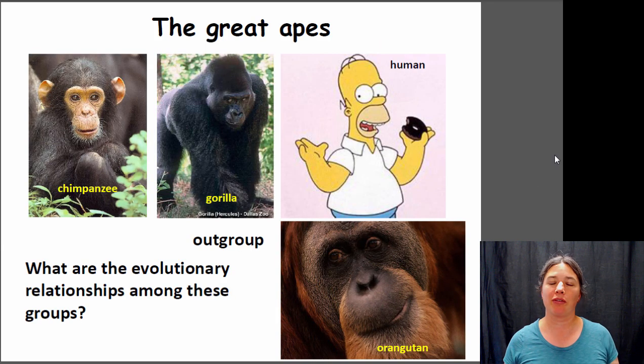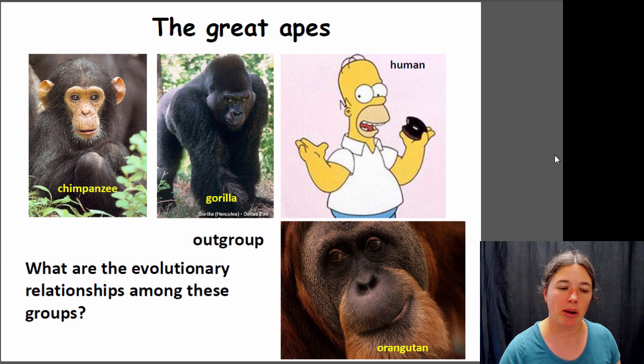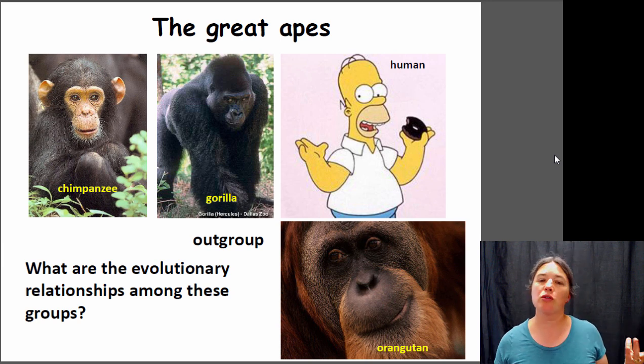Let's look at how we can apply that to a specific phylogenetic tree. These are the great apes, the old world apes. There are actually a few more species in this, but we're going to simplify it. Generally we have chimpanzees, gorillas, orangutans, and humans. We want to know the evolutionary relationship between these organisms.